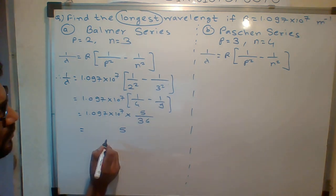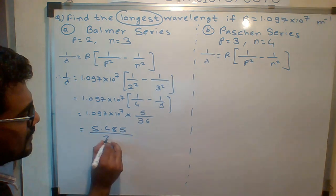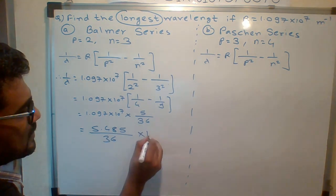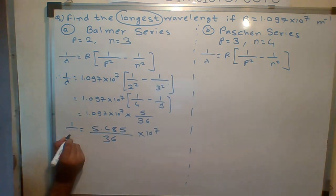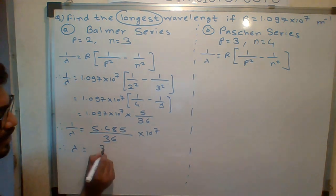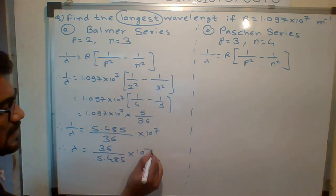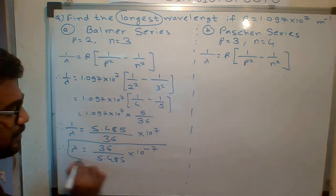5.485/36×10⁷. But I don't want 1/λ, I want λ. So I will take the reciprocal: λ = 36/(5.485×10⁷) meters. This is your final answer in meters.